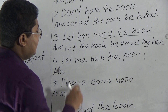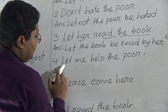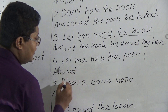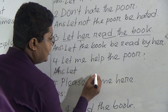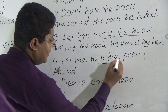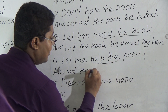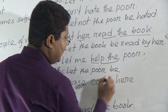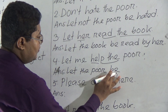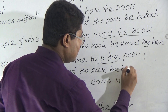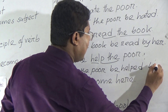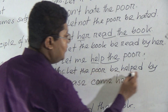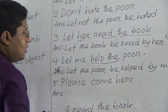Example four: 'Let me help the poor.' 'Let' is given, so we take 'let.' Then object of the main verb becomes subject: 'the poor.' Add 'be': 'Let the poor be.' 'Help' becomes 'helped.' Add 'by' because subject is given. 'Me' becomes 'me' in objective form. Result: 'Let the poor be helped by me.'